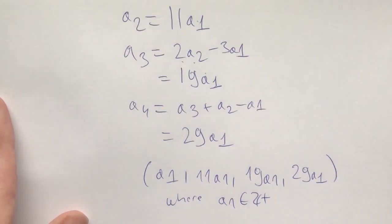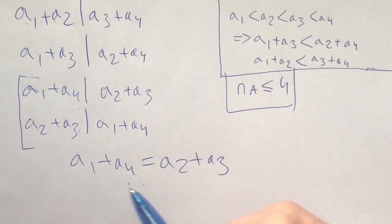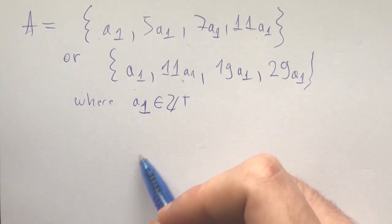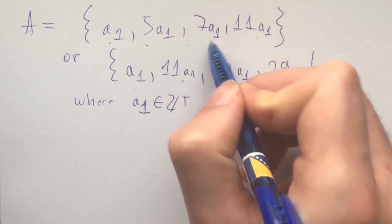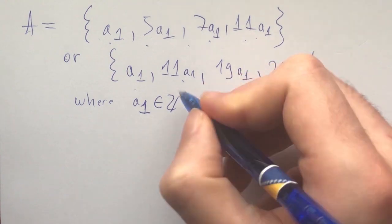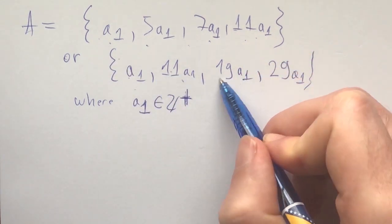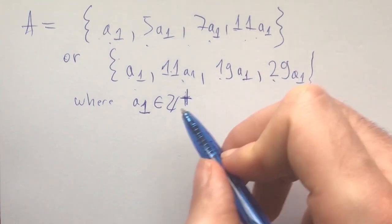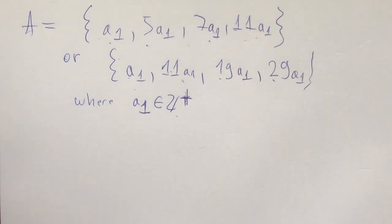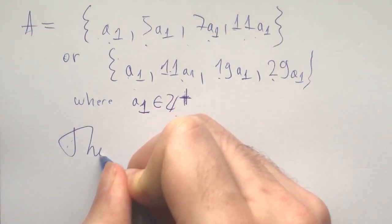Now let's bring it all together and sum it up. We first showed that n_A is less than or equal to 4, then we started doing some number theory and substitutions which led us to a family of solutions. Namely, one set of solutions being a1, 5a1, 7a1, and 11a1 where a1 is a positive integer, and the other being the family a1, 11a1, 19a1, and 29a1 where a1 is a positive integer. This finishes up the problem, and as always, thanks for problem solving.